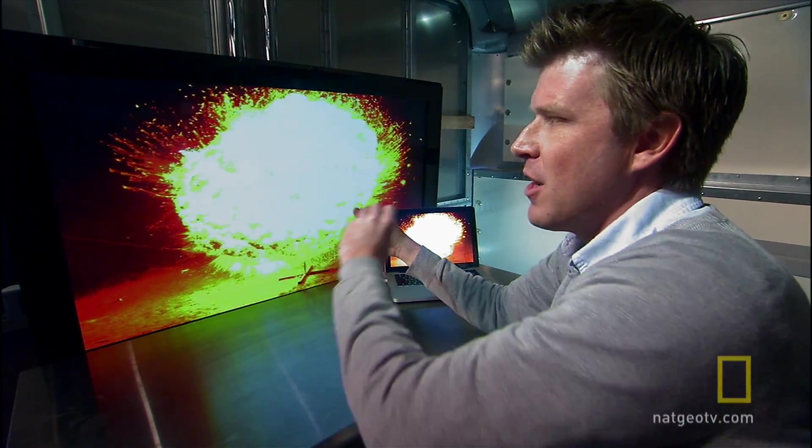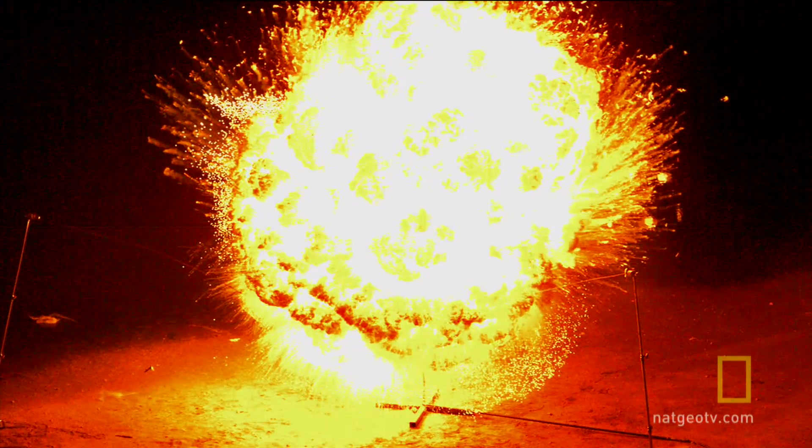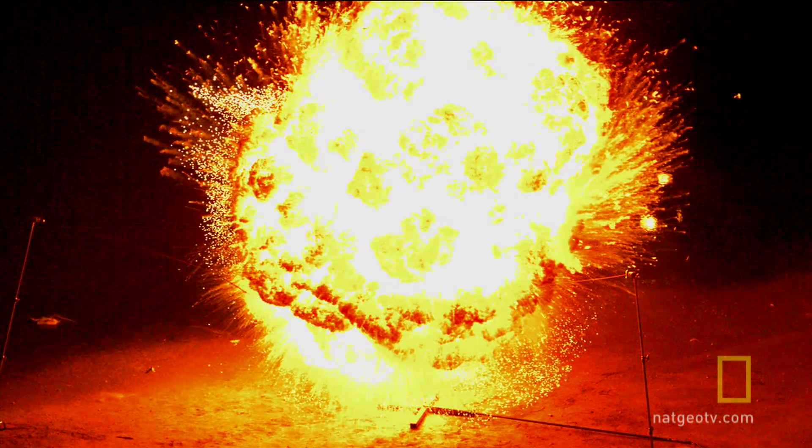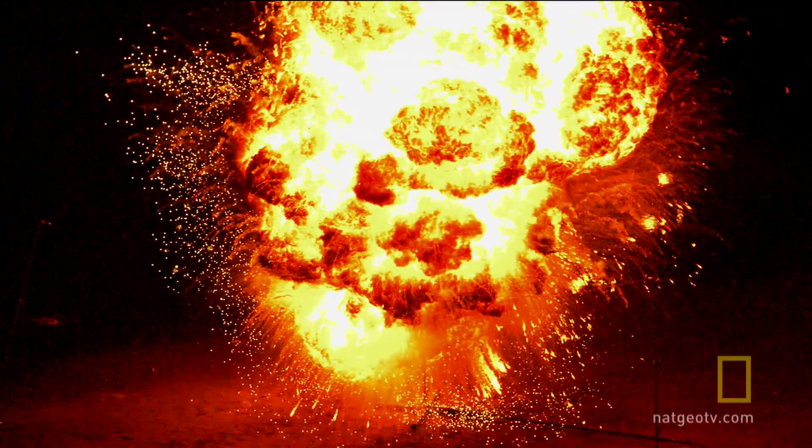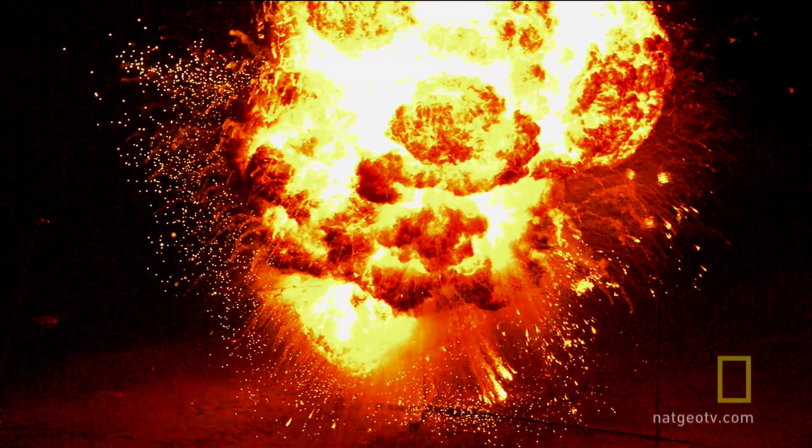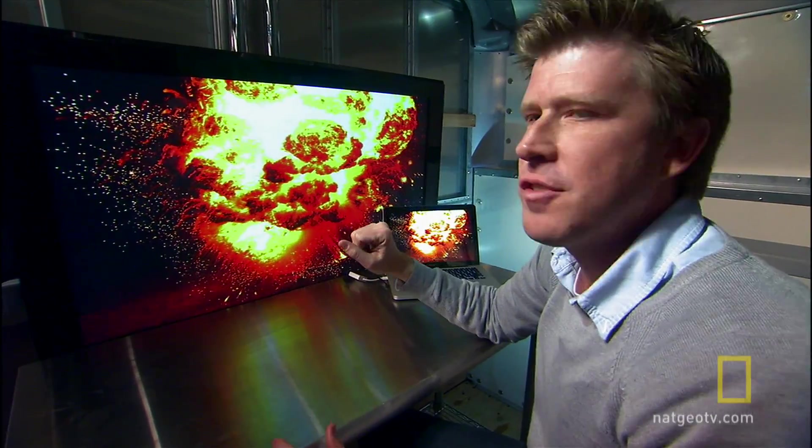That's just like in a real supernova. We often get little blobs of calcium racing out a tenth the speed of light. And you can see there's all these turbulent eddies where gas is turning over from these instabilities you have in the explosion. This is exactly like what we see in the modern simulations of supernovae.